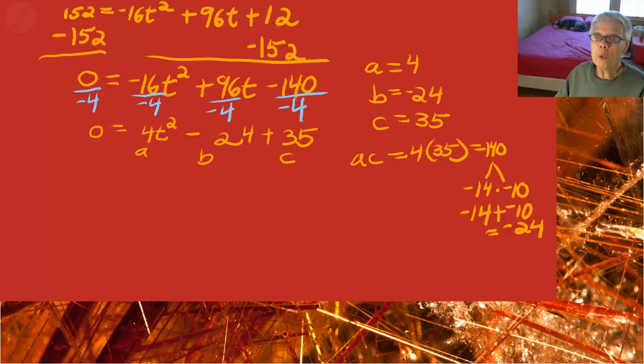Now what do we have? We're going to write this equation as 0 equals 4t square minus 10t minus 14t plus 35.